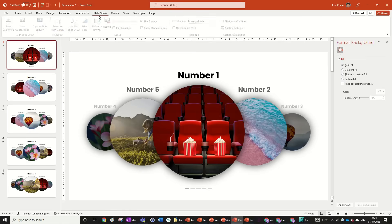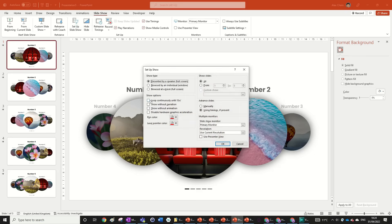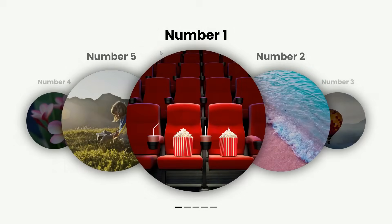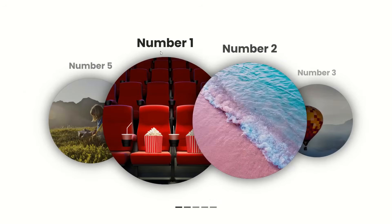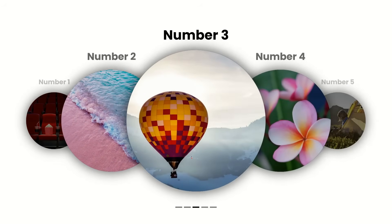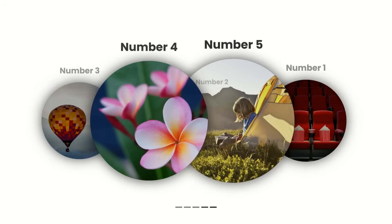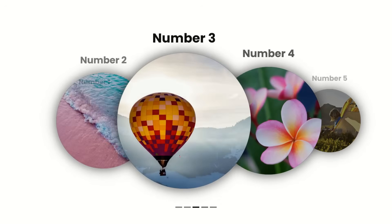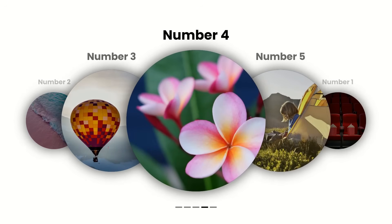Go to Slideshow, Setup Slideshow, and check 'Loop Continuously Until Escape' — hit Escape top-left to stop. Then go From Beginning to see the final animation. You can go left to right, then back and forth, forward and back — the carousel loops fully.